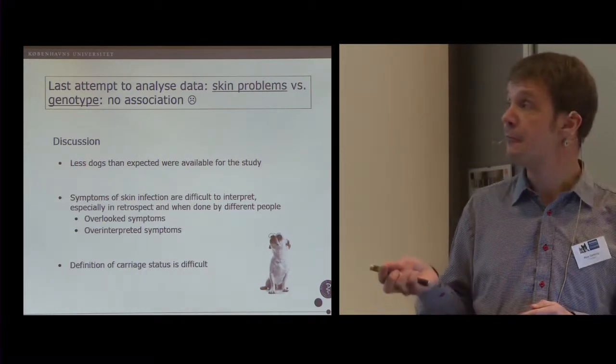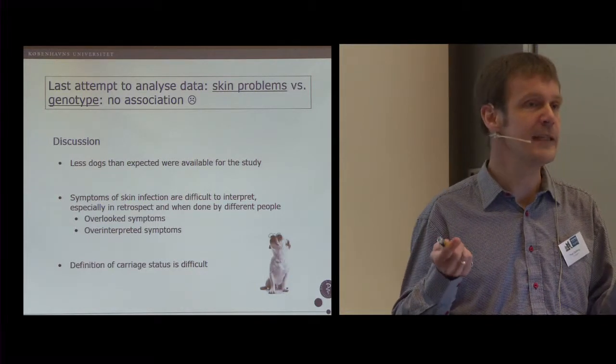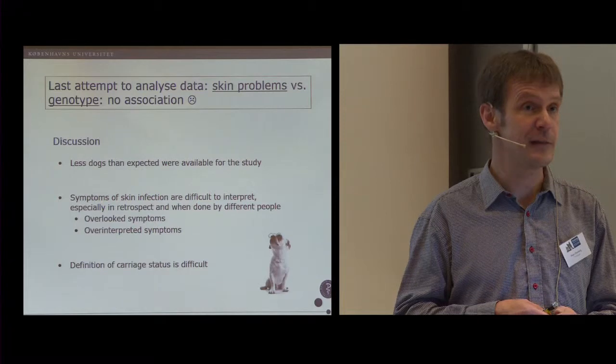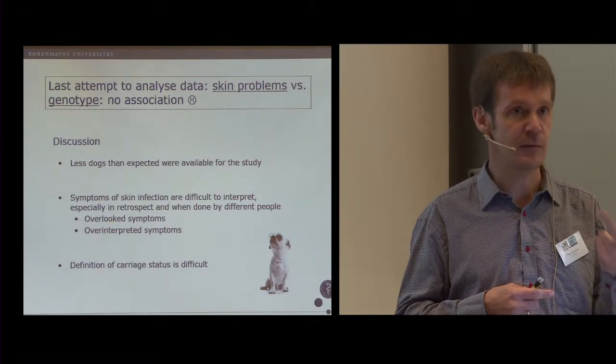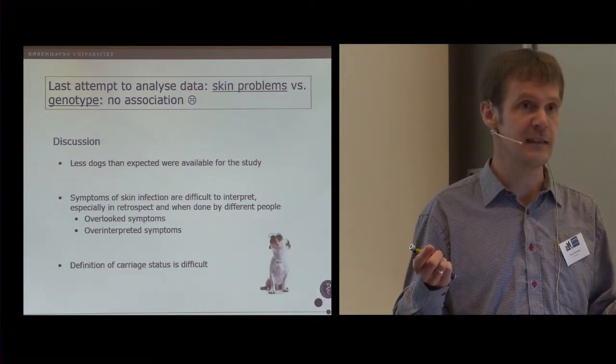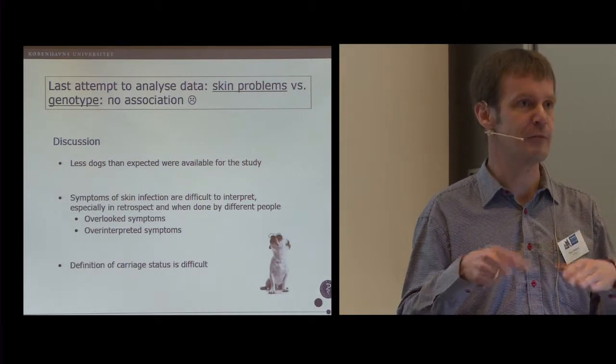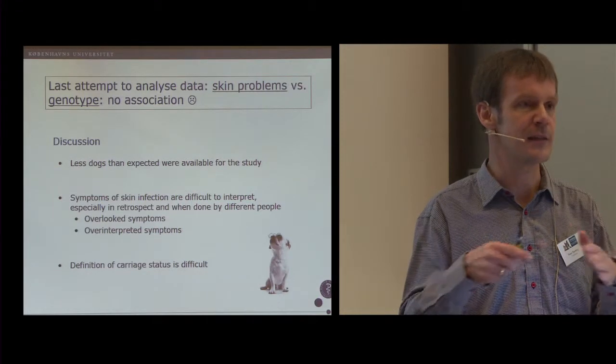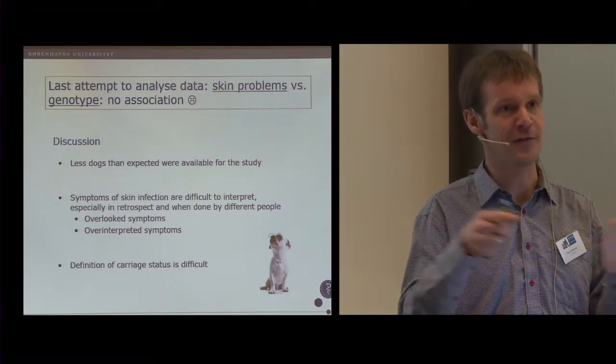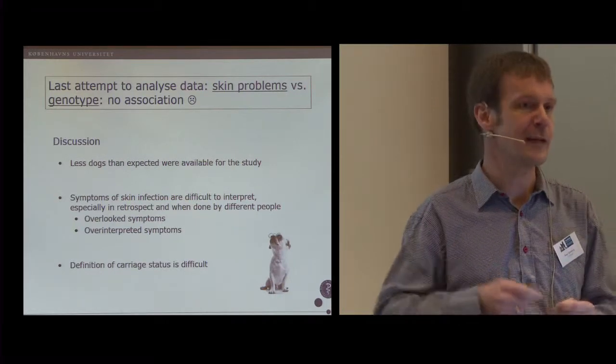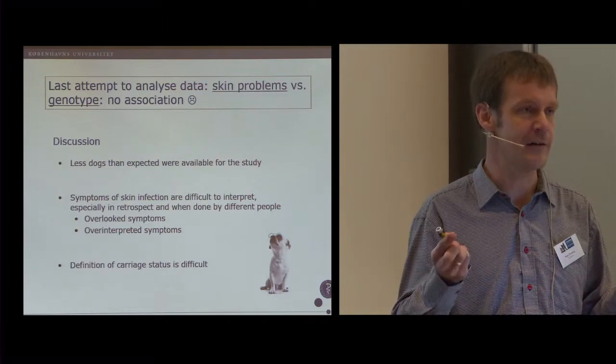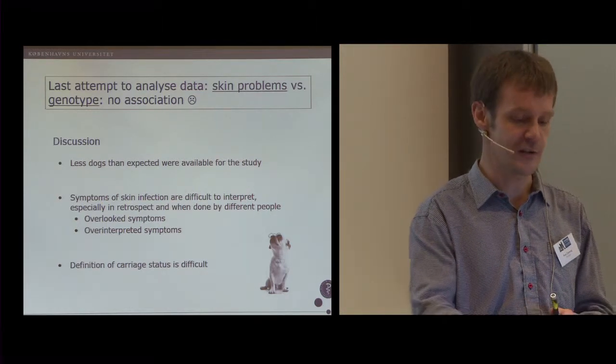And then finally, I explained to you how we define carrier status in dogs, but other people may define it differently. We said three positive samplings, then you're a permanent carrier. But imagine if we had taken 10 samples over one year. Then I'm quite sure we would have less permanent carriers because it's more difficult to have 10 positive samples in a row than three in a row. But this is how we have to do it because it's not been defined in the literature before what is a permanent carrier. So we made up our own decision of that.